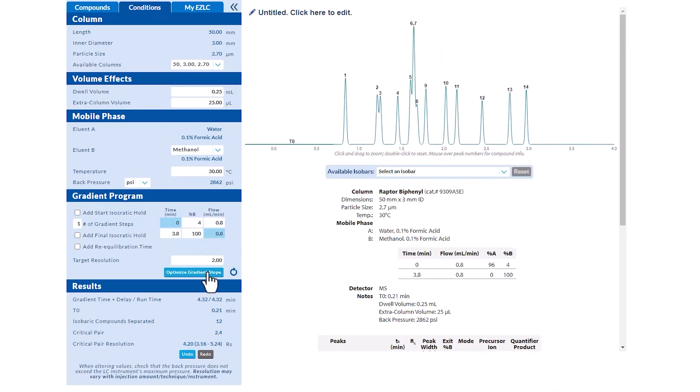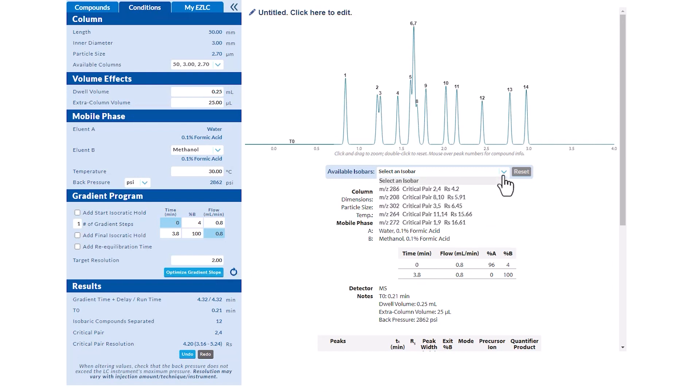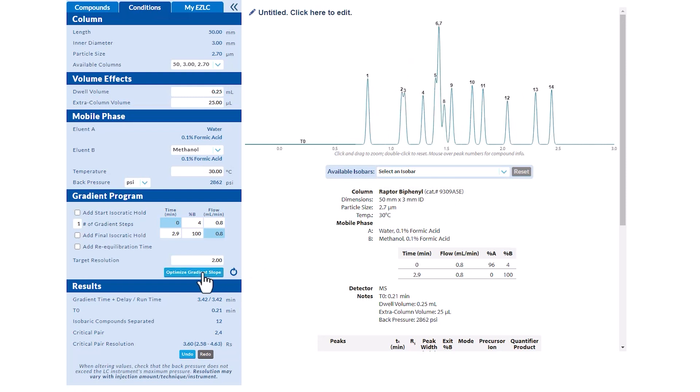The results section at the bottom of the tab and the modeled chromatogram have updated automatically showing a shorter runtime. Our isobar resolution remains high, so we'll click the button again. We can continue to optimize by clicking the button until we're pleased with the separation or the button has grayed out. This indicates that no further refinements are available.